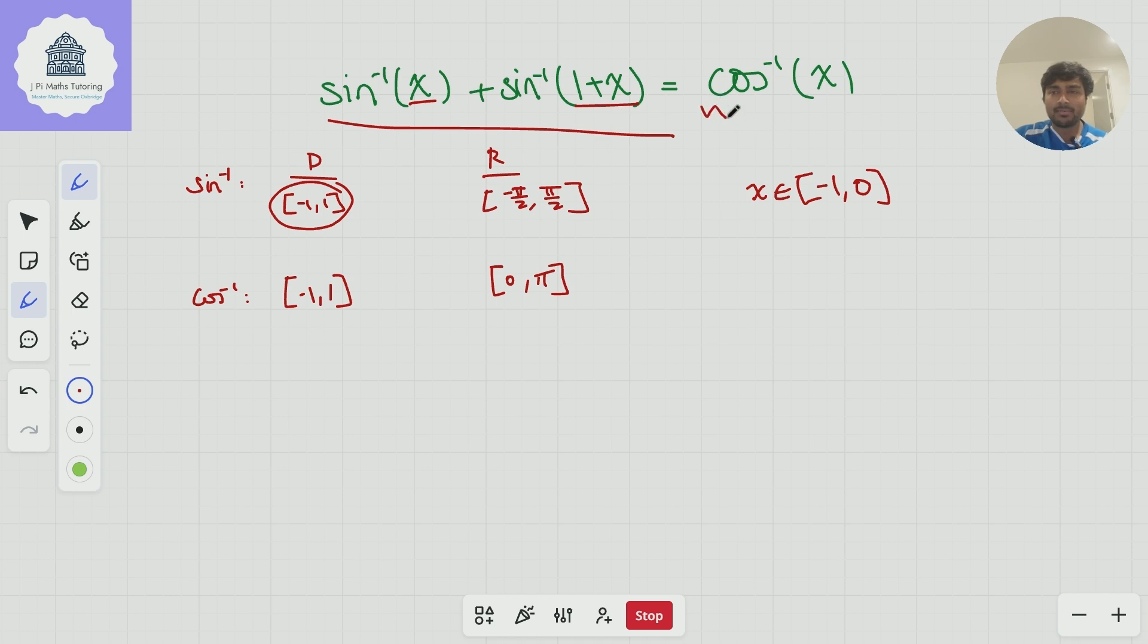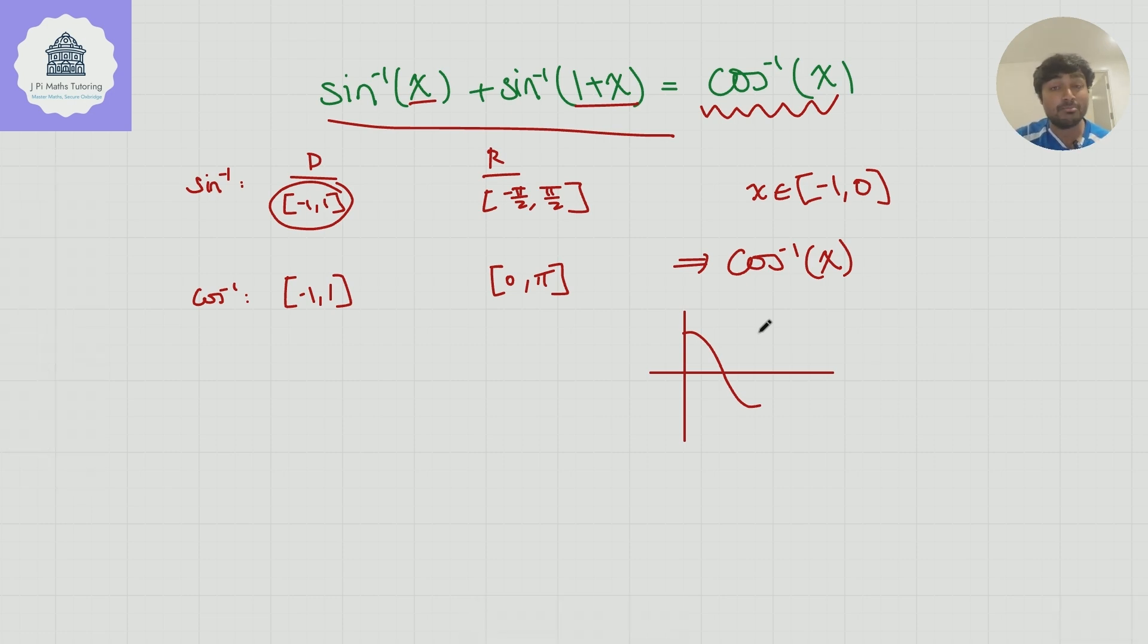Now, if we take that and think about the right-hand side, what can we say about cos inverse of x if x is between minus 1 and 0? Well, let's just think about a cos graph, or if you're comfortable, draw an inverse cos graph. And to be honest, if you're looking to sit the MAT and TMUA, I suggest you just memorize the graphs of inverse sine, inverse cos, and inverse tan.